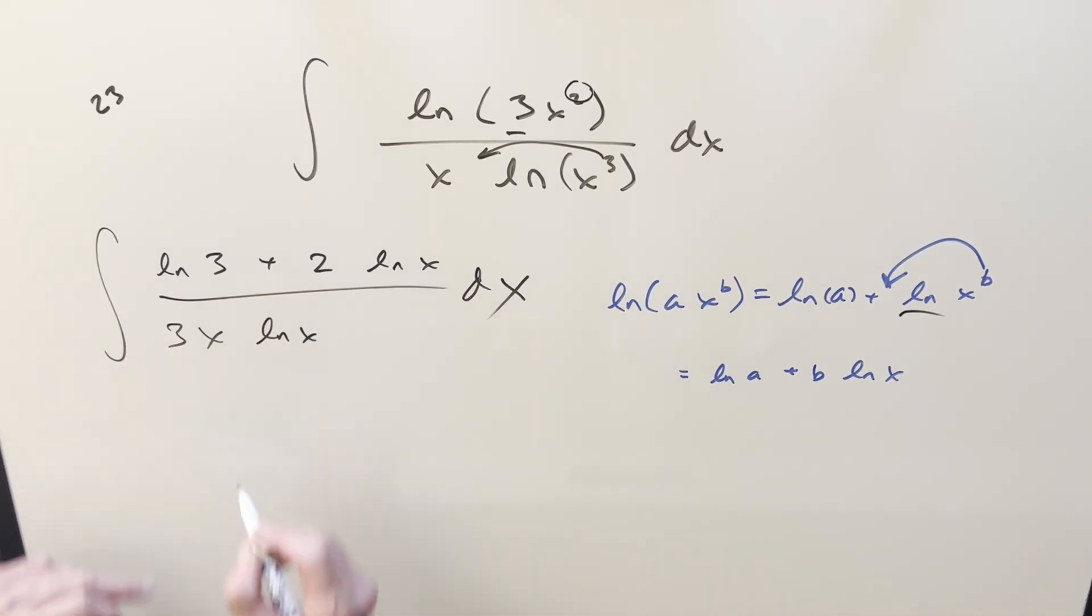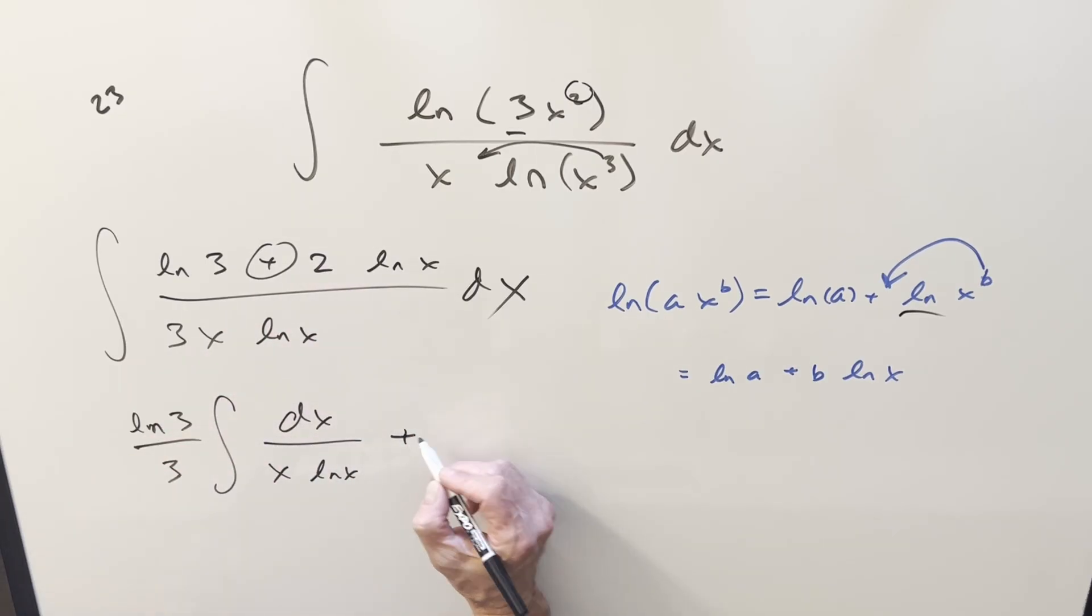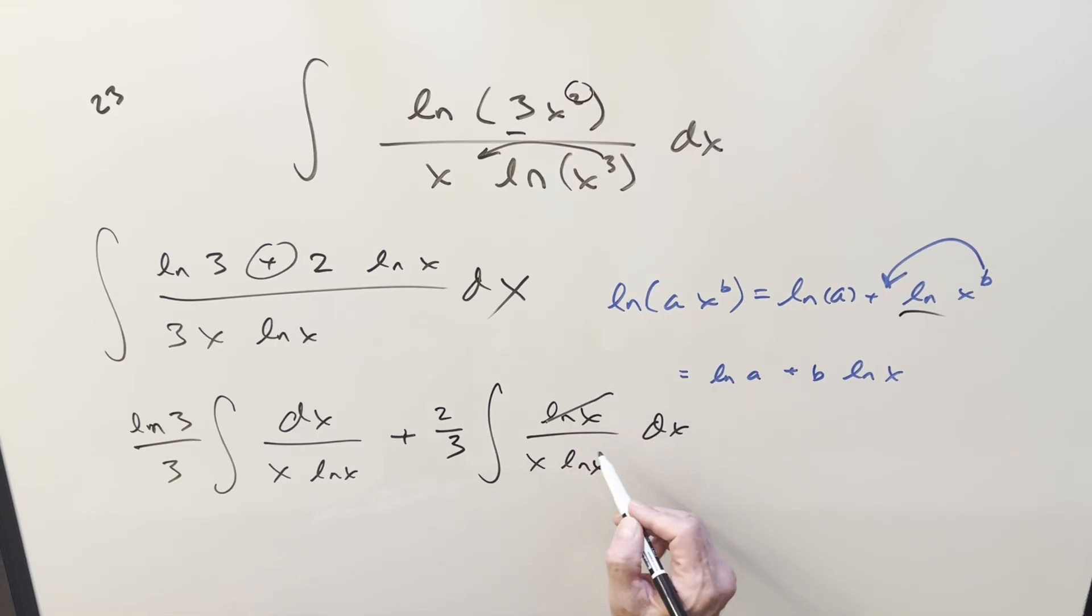So then I'll break it into two integrals, breaking it on the plus sign. We have some constants, so I'll bring natural log 3 over 3 in front. That's kind of an unusual constant, you don't see that every day. So this is going to be dx over x ln x. Then for the second one, again constants 2/3, so it's going to be 2/3 times ln x over x ln x. But then cancel the ln x's here, so we have 1 over x.